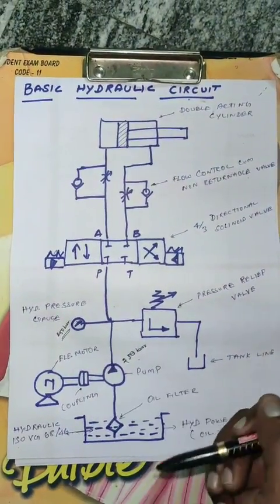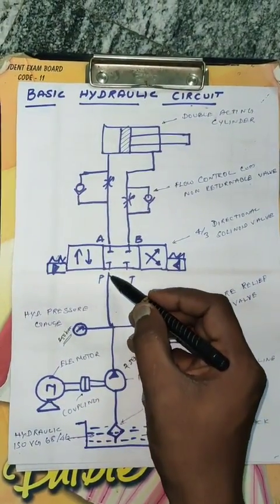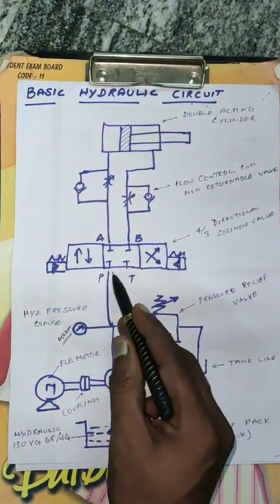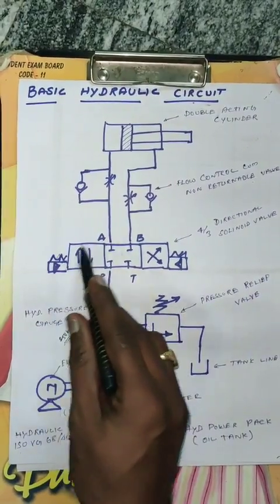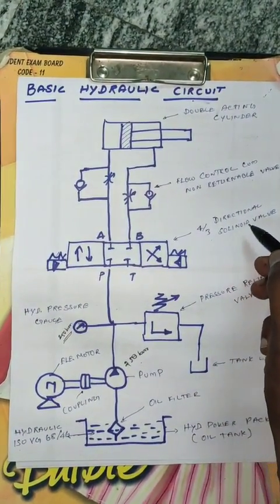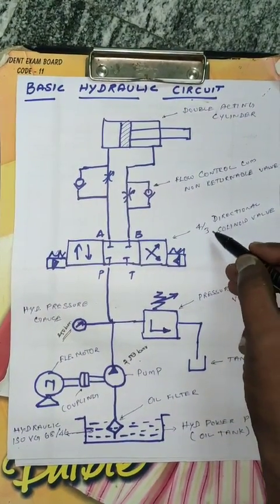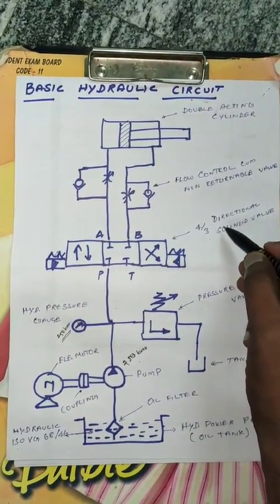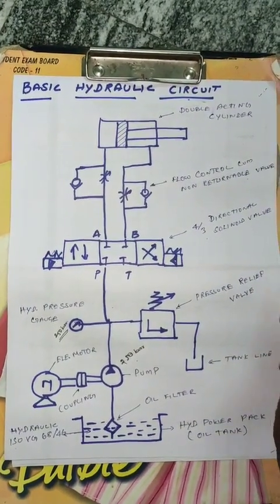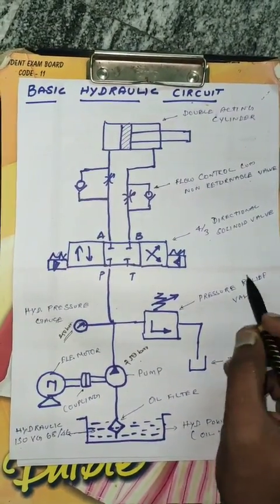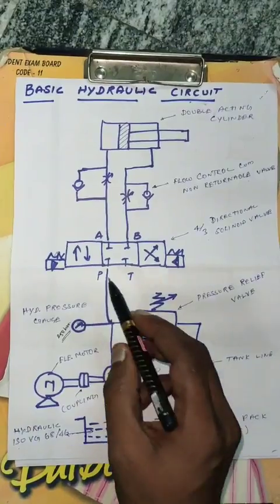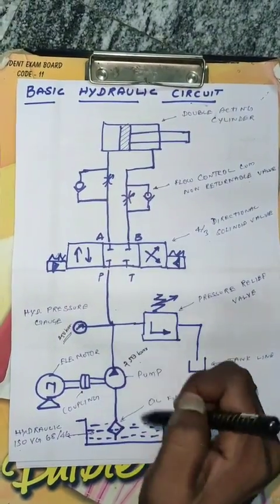Pressure oil here. 4 by 3 — direction control cylinder valve. 4 by 3 — block here.